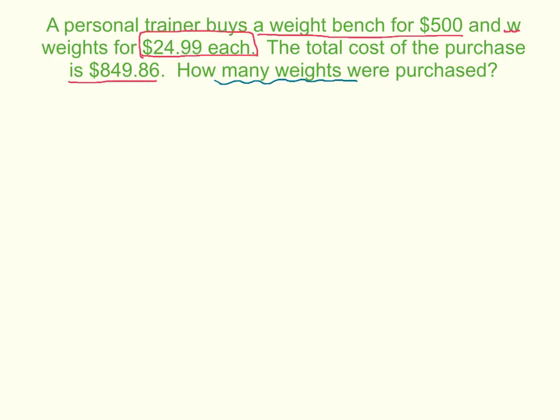How many weights were purchased? So there's our question. So that also goes back to this variable that they gave us. w is equal to the amount of weights purchased. Now to write the equation, we want to add up everything that we're buying to equal the total, $849.86.